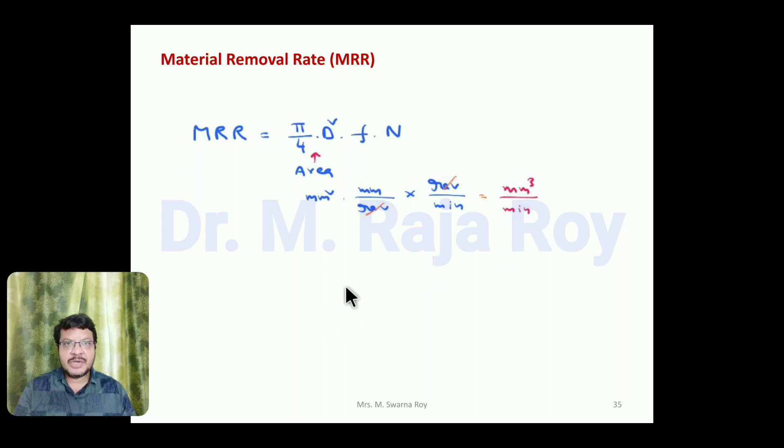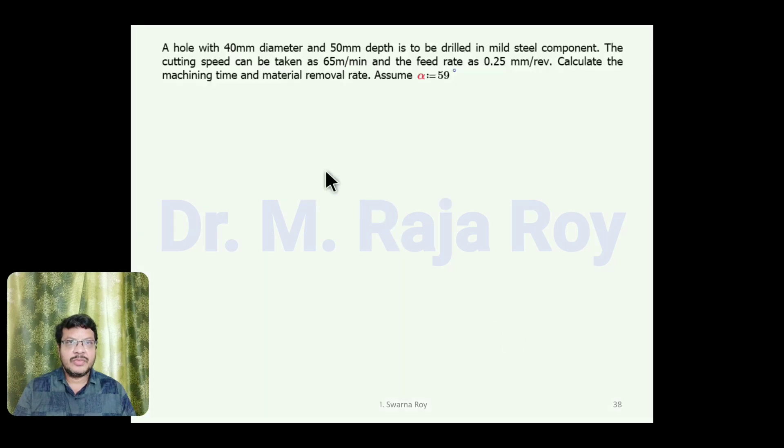To understand this concept clearly, we will solve a problem now. A hole with 40 mm diameter and 50 mm depth is to be drilled in a mild steel component. The cutting speed can be taken as 65 meters per minute, and feed rate is 0.25 mm per revolution. Calculate the machining time and material removal rate. Assume α equals 59 degrees.